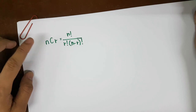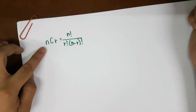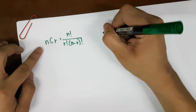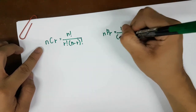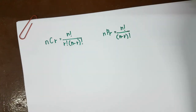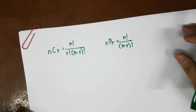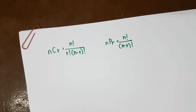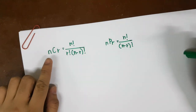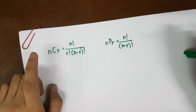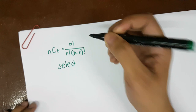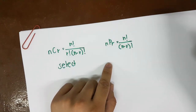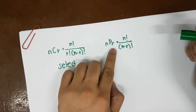I can assure you that this is not the best way to understand combinations. The next formula is NPR, which is equal to N factorial over N minus R factorial. This is also not the best way to understand combinations and permutations. In some books, you are asked to use the NCR formula when selecting R things out of N, and the NPR formula when arranging R things out of N.